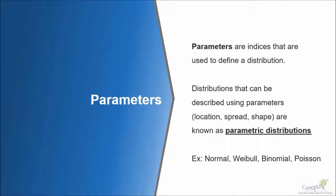What are parameters? Parameters are nothing but indices that are used to define a distribution. If you recollect what we learnt earlier, distributions can be described using parameters like location, spread and shape. Such distributions are called as parametric distributions.